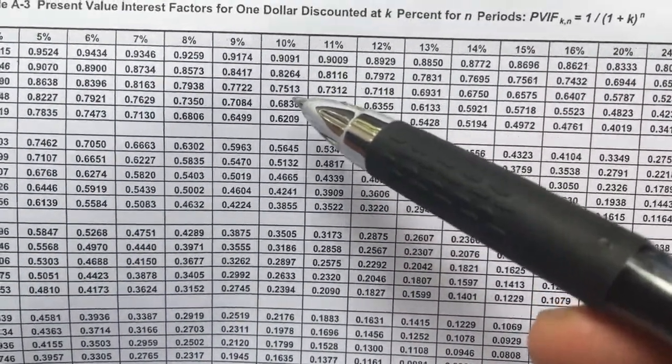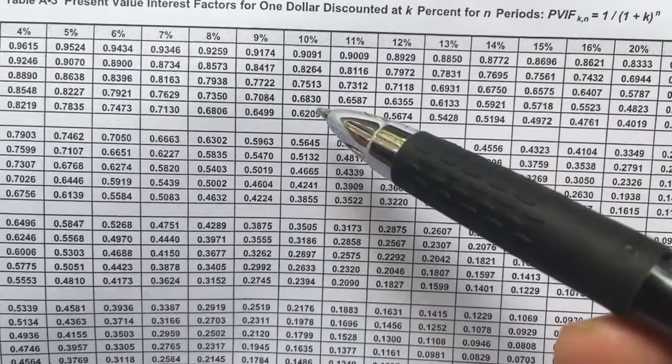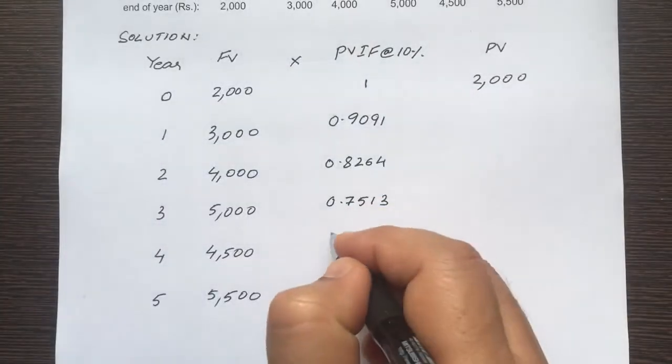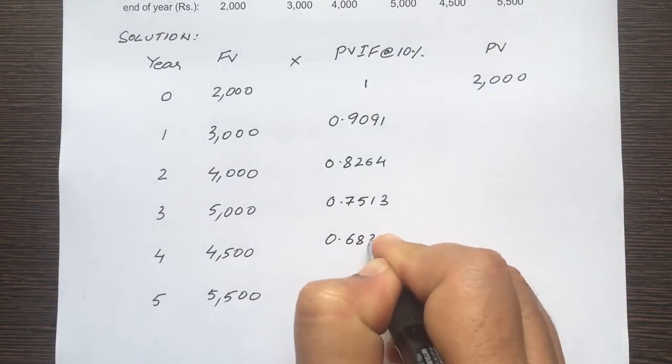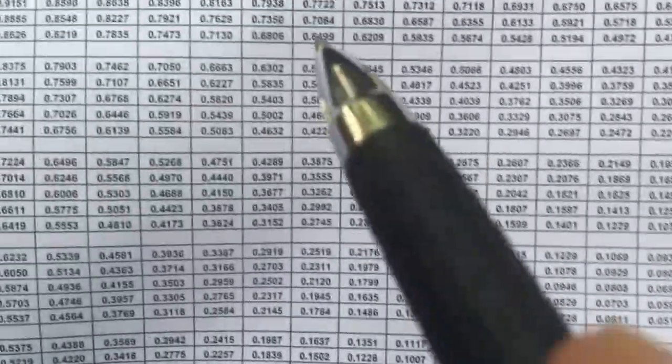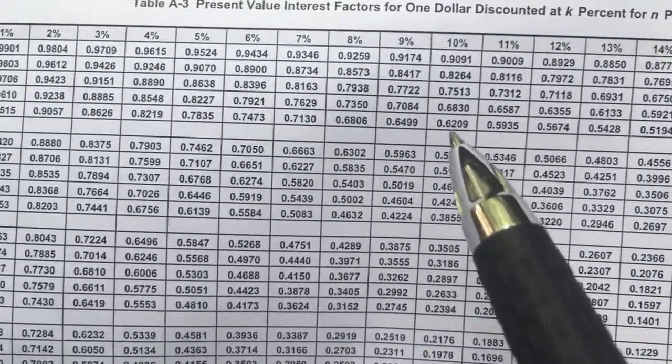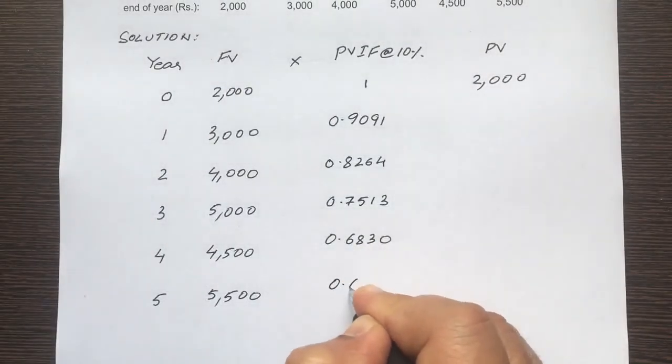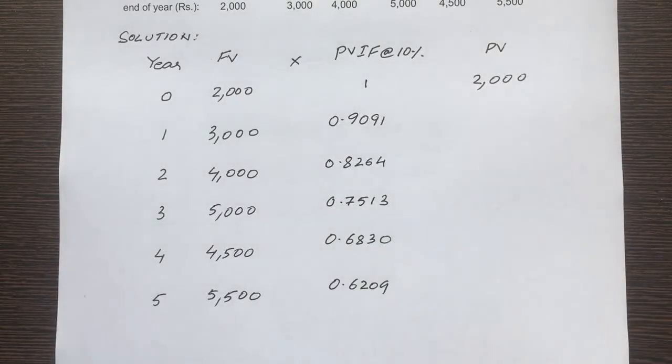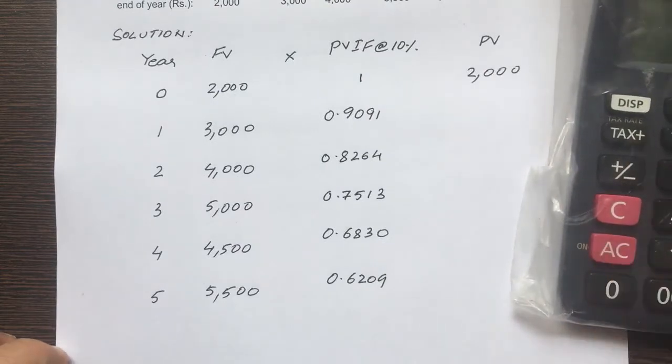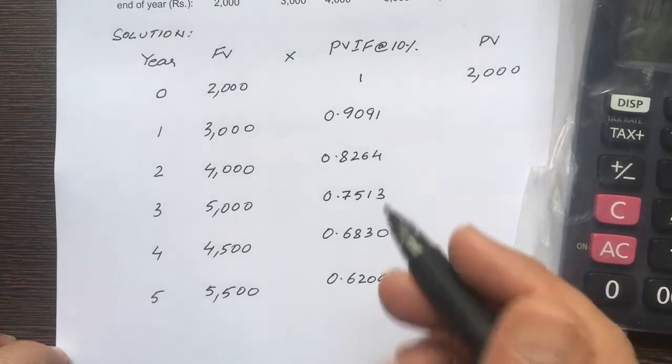For year 4, 0.6830, and for year 5 it is 0.6209. Multiply: so 3,000 times 0.9091 equals 2,727.3.